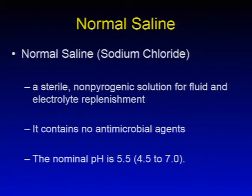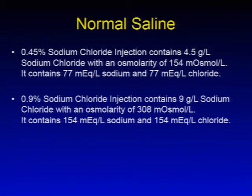Normal saline, which is sodium chloride, is a sterile, nonpyrogenic solution for fluid and electrolyte replenishment. It contains no antimicrobial agents, and the normal pH of a bag of normal saline is about 5.5, typically ranging from 4.5 to 7. 0.9% sodium chloride contains 154 milliequivalents per liter of sodium and 154 milliequivalents per liter of chloride, with an osmolarity of 308 milliosmoles per liter.